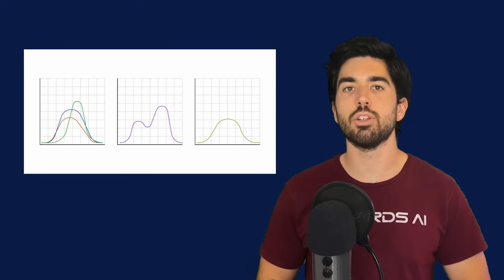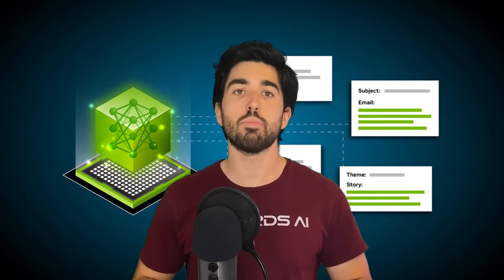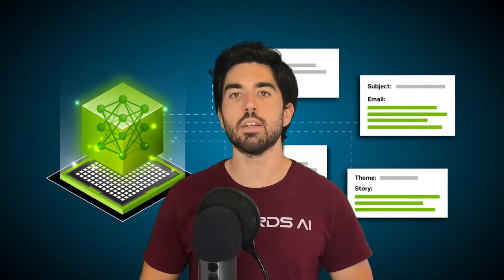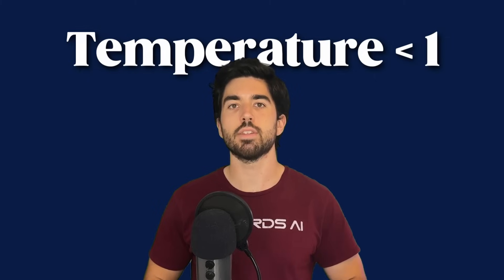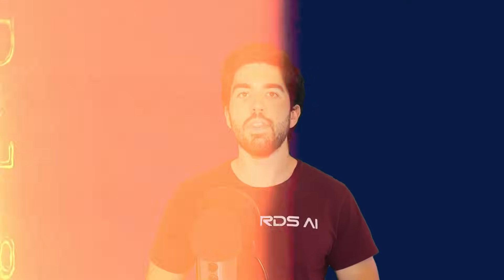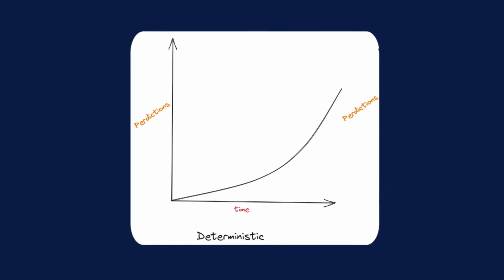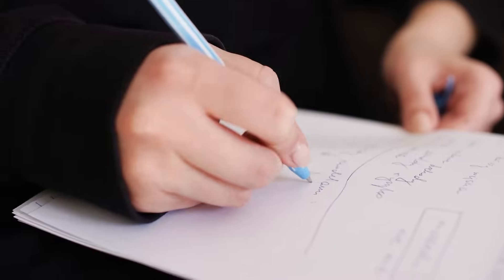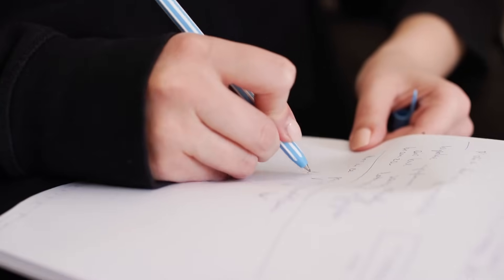But how does it work? When the model makes a prediction, it generates a vector of probabilities for each possible token in its vocabulary. The next generated token is then sampled from this distribution according to its probabilities. You can adjust the token probability distribution using the temperature parameter. Use a temperature value below 1 to further increase the probability of the most likely token, making the output more deterministic. Lower temperature values are often used for summarization or question answering over your documents.